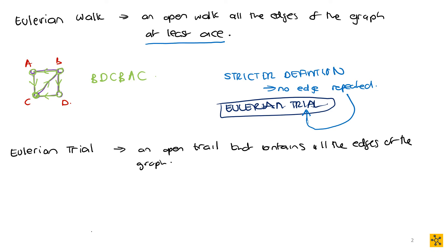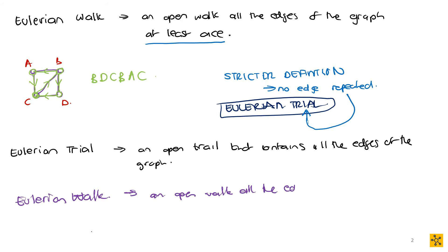In some contexts and subjects, what they'll do is say an Eulerian walk is actually an Eulerian trail — meaning they classify the Eulerian walk as an open walk with all the edges of the graph but no edge is repeated. This is just a thing to remember and take note of when reading different sources.